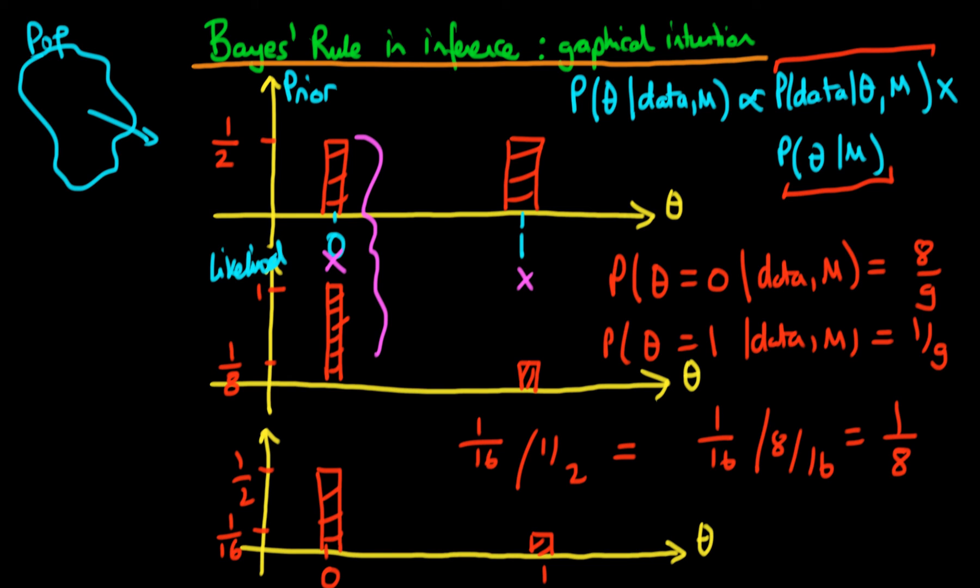So really all we need to do is we need to basically move up each of these bars by an amount such that their area sums up to one, and that actually amounts to dividing both of these bars by one half plus one sixteenth, which we've already worked out is actually nine sixteenths.